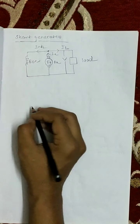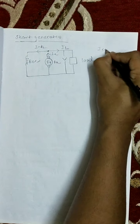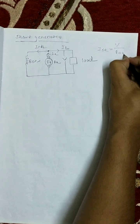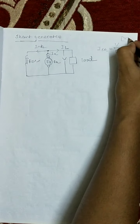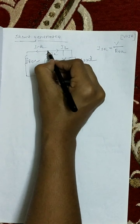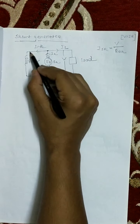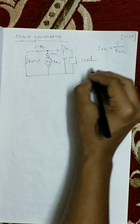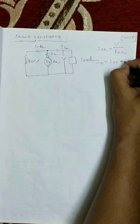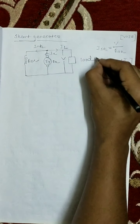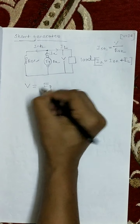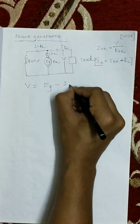This is the shunt field and this is the shunt field resistance. The shunt field current ISH equals to V divided by RSH (shunt field resistance), because of Ohm's law: V equals to IR. The armature current splits in two directions — one going through the shunt field and another through the load — so IA equals to ISH plus IL.